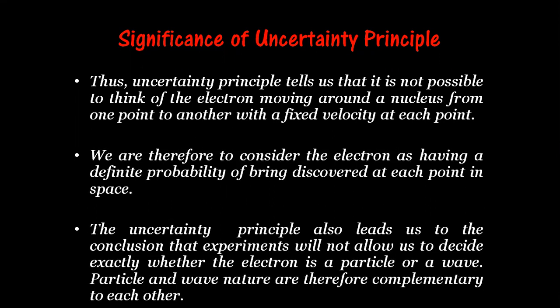The uncertainty principle also leads to the conclusion that experiments will not allow us to decide exactly whether the electron is a particle or a wave. The electron is treated both as a particle and as having wave nature — that is what we call dual nature — and these two natures are complementary to each other. As Stephen Hawking stated, the Heisenberg uncertainty principle is a fundamental and inescapable property of the world. It is not just a principle but an inherent property of any subatomic particle that it is not possible to find its conjugate properties — position and momentum — simultaneously and accurately.